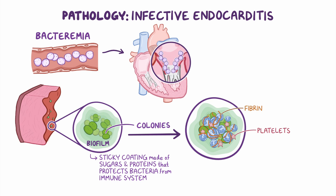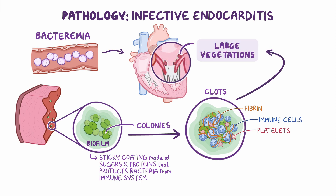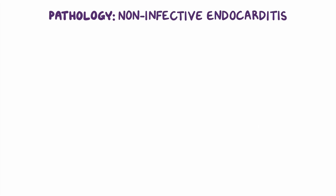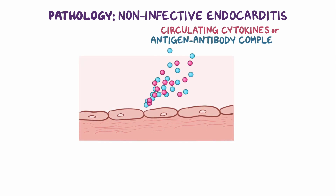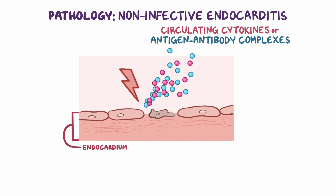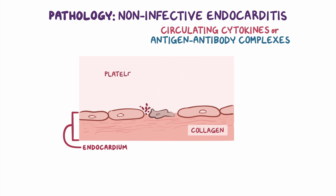These bacterial colonies start collecting clots made of fibrin and immune cells, such as leukocytes, and form large vegetations. On the other hand, non-infective endocarditis usually starts with an underlying condition that increases circulating cytokines or antigen-antibody complexes, which settle in the endocardium and cause inflammation. This results in endocardial damage, which exposes the underlying collagen and in turn causes platelets and fibrin to adhere and form tiny blood clots. Over time, the clots can grow and develop into a sterile vegetation.